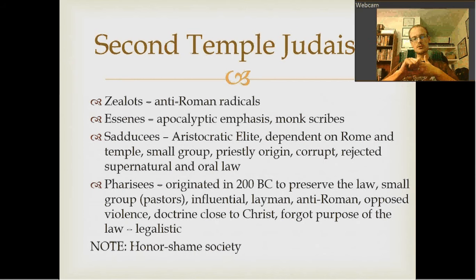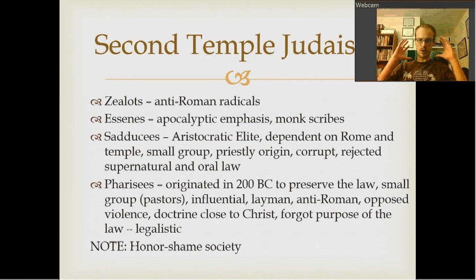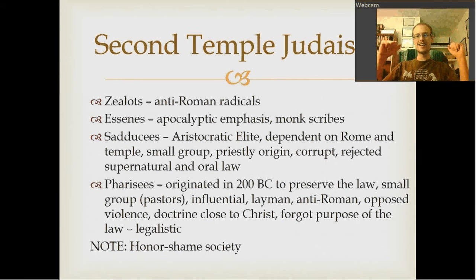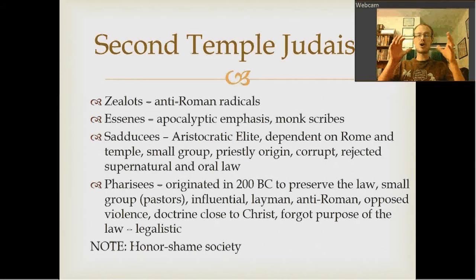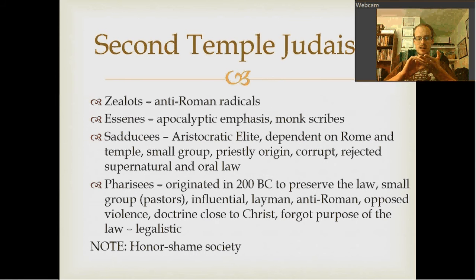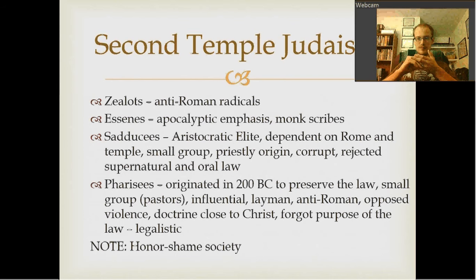The Essenes had a very strong apocalyptic emphasis — that the Messiah would come and wipe everything out. They were also scribes. In a sense, this was the earliest idea of a monastic community that there really was, before it became popular in the Roman Catholic Church. The third group was the Sadducees — a very small group composed of the aristocratic elite. They were Jewish, rich, of priestly origin, very dependent on Rome and on the temple for their livelihood. They were seen as corrupt.